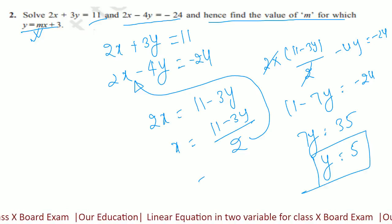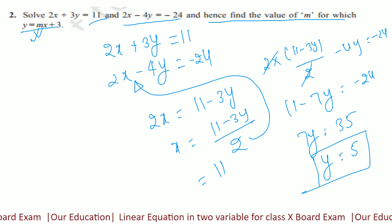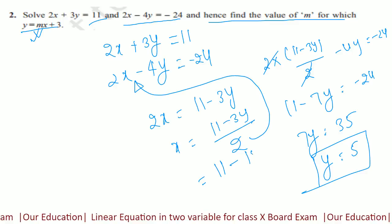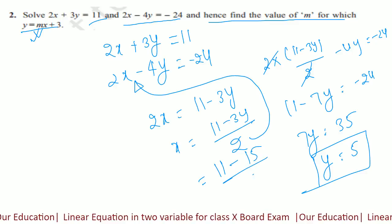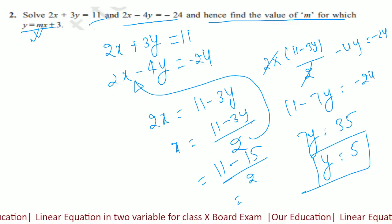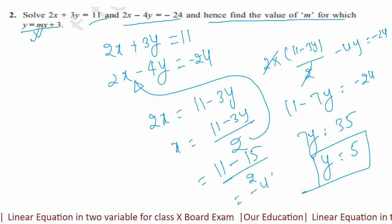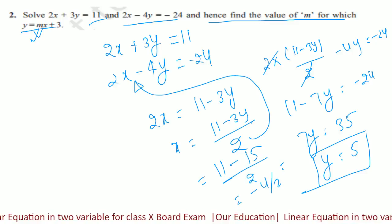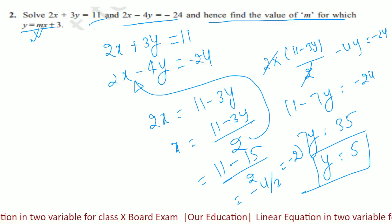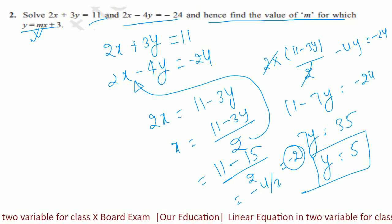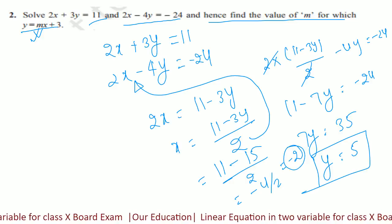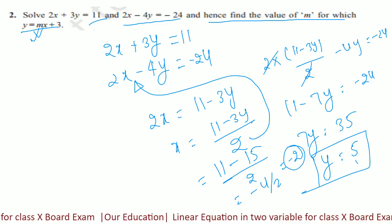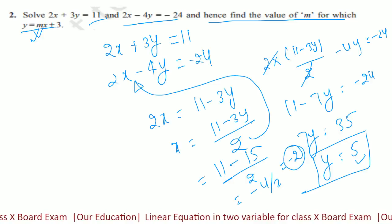y की value 5 यहां put कर दीजे: 11 minus 15 by 2, that is equal to minus 4 by 2, that is equal to minus 2. So आपका x आ गया minus 2 और y आ गया 5.